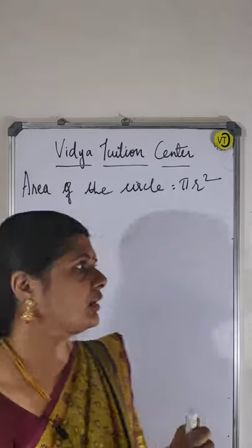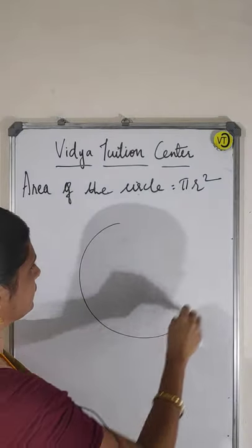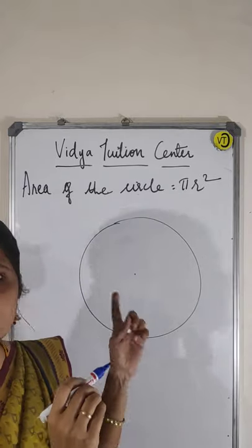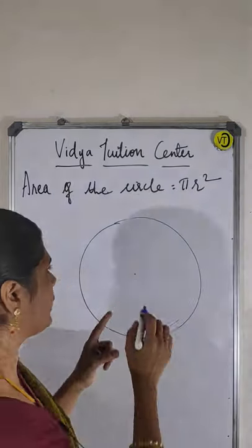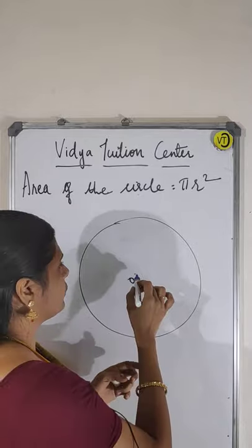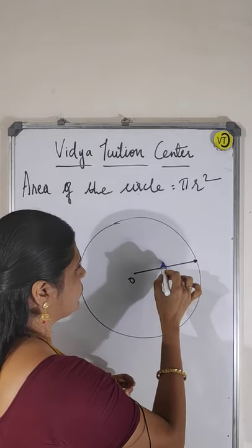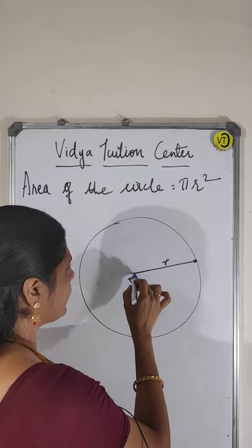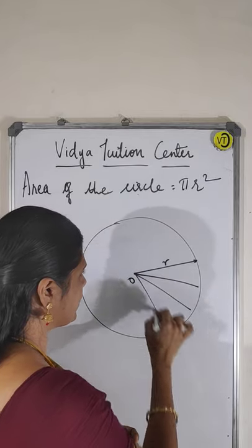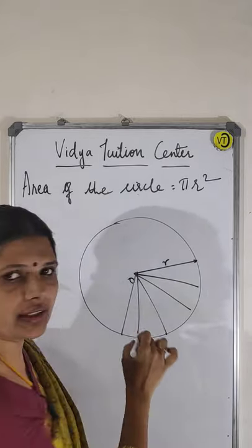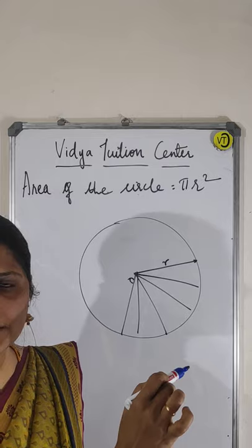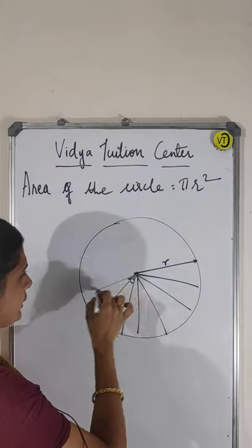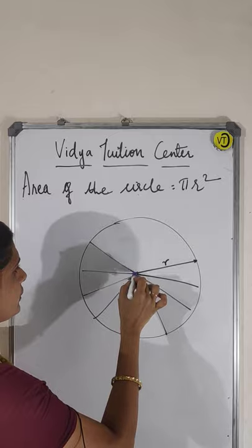So first of all, take a circle. In this circle there is the center — I am taking it as O. That is the radius, you know it is a radius. If you draw so many radii from the center touching the perimeter of the circle, so many radii I drew.